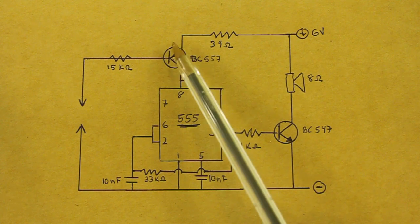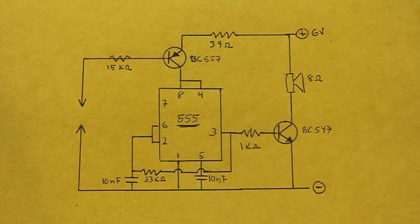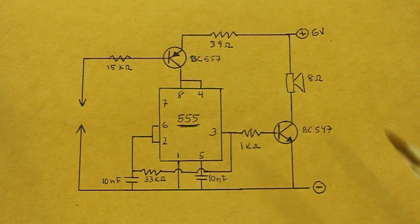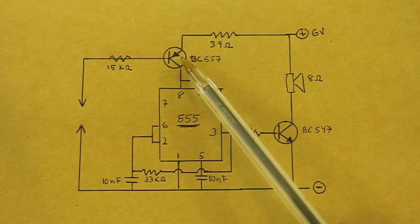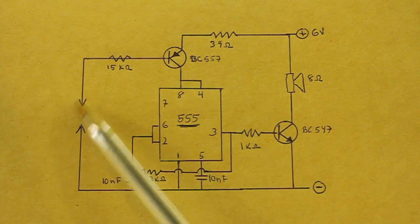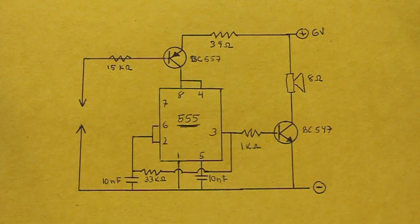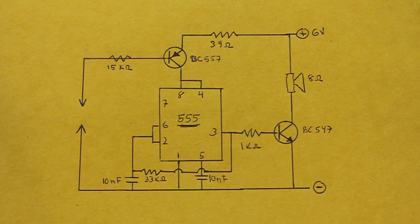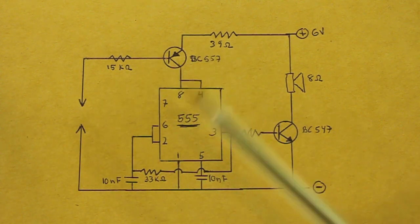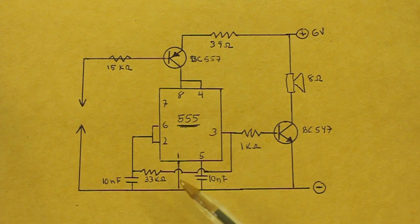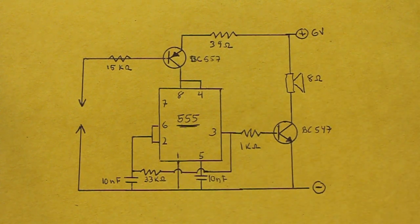However, here we have this PNP transistor. Remember that a PNP only conducts current when the base is grounded. These two are our test leads. So if we have continuity in these two leads, then the transistor will conduct and the oscillator will start working, making the speaker emit a beep.